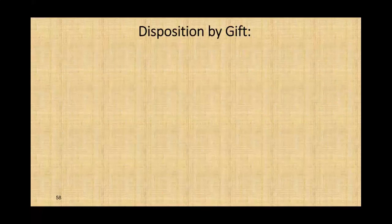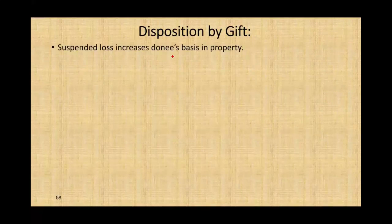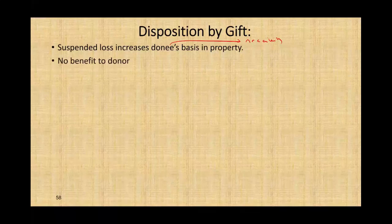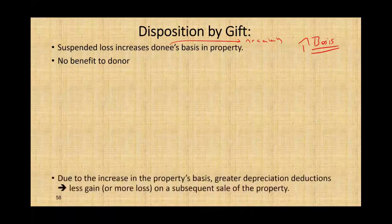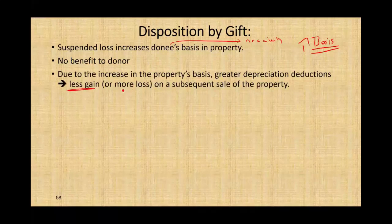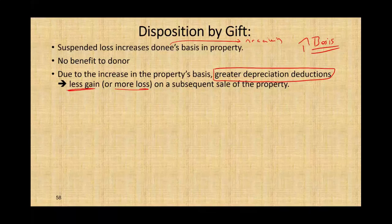Disposition by gift — what happens? Any suspended losses increase the donee's basis of the property. The donee is the person receiving the property. If there are any suspended losses, they increase the donee's basis. The donor does not get any benefit. When you increase your basis, two things could happen when you sell the property: you're going to have less gain or more losses. It's not going to help you now — it's going to help you later. You'll have greater depreciation, less gain when you sell, or more losses.